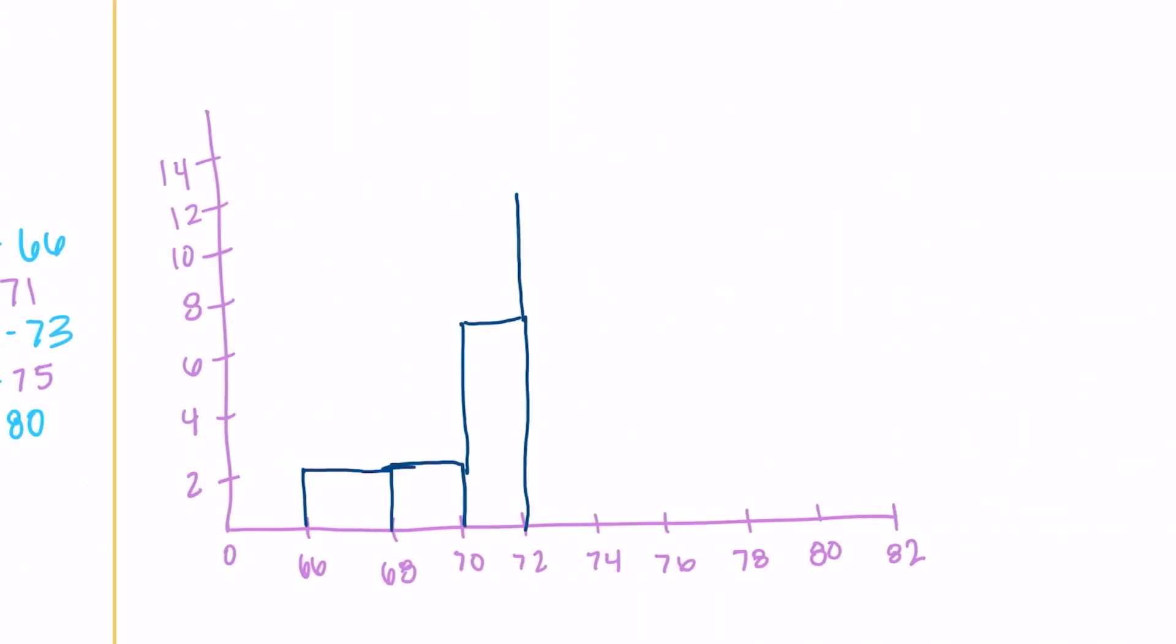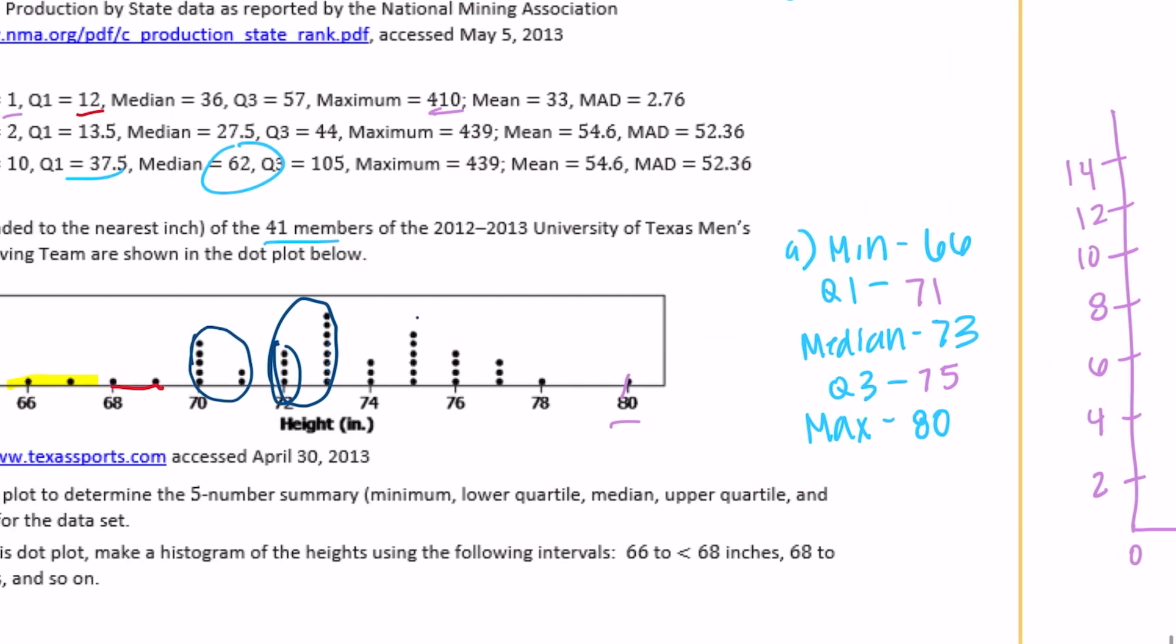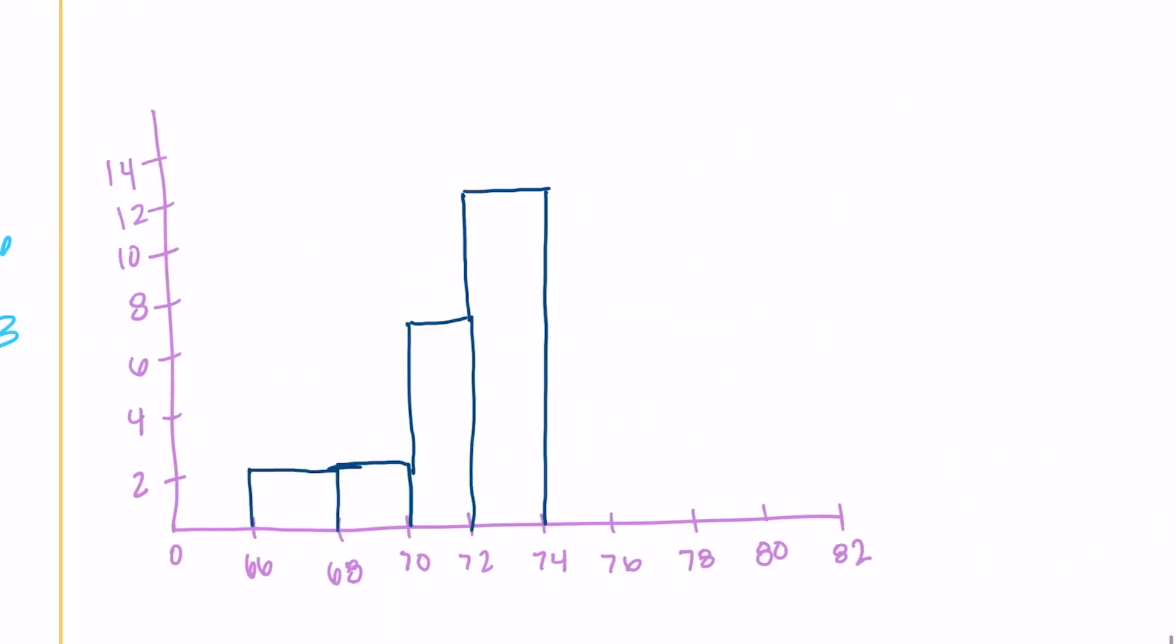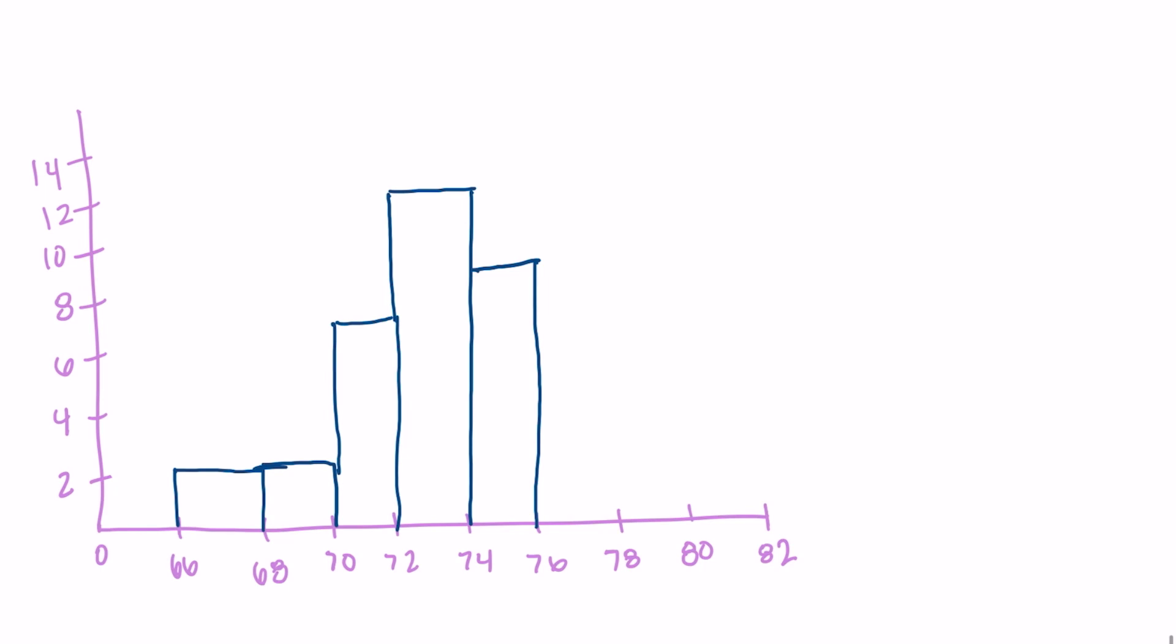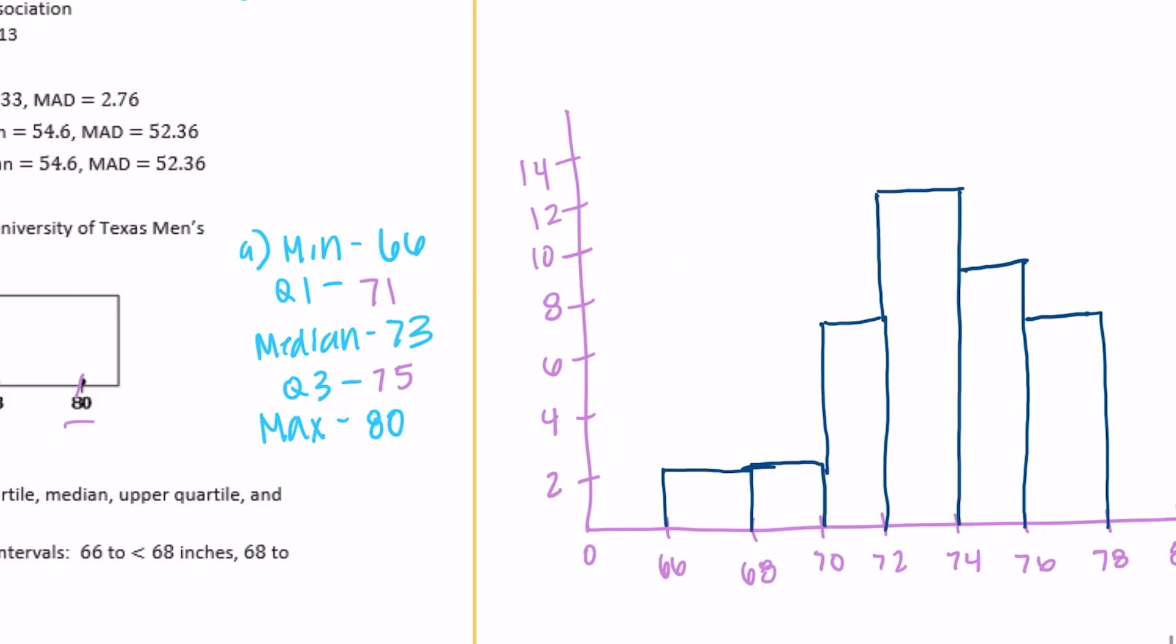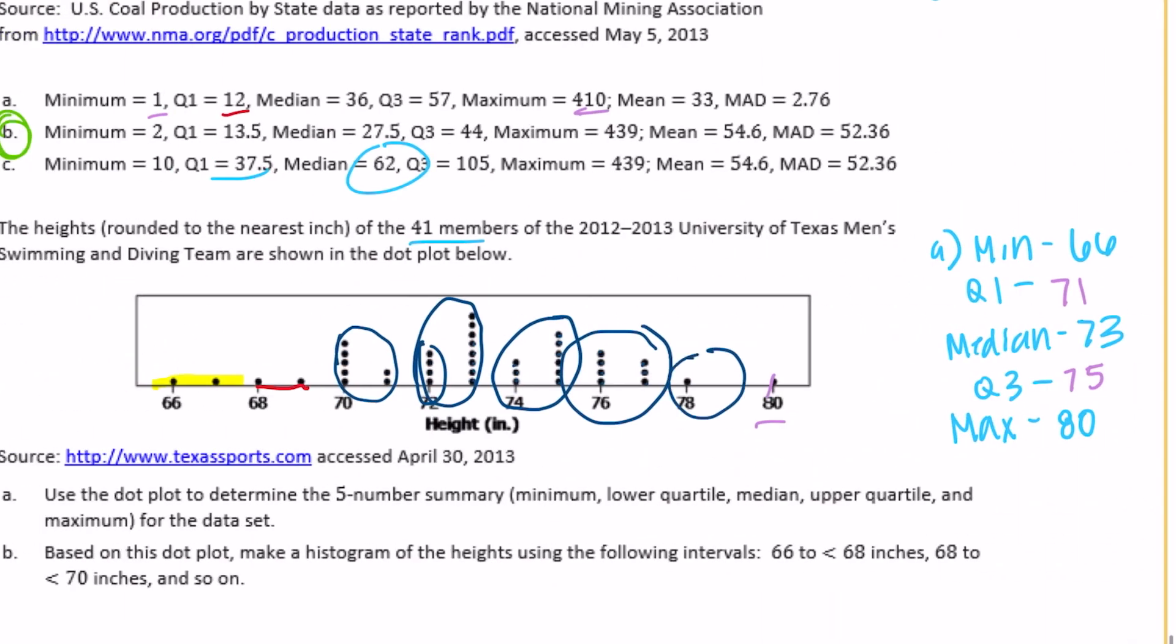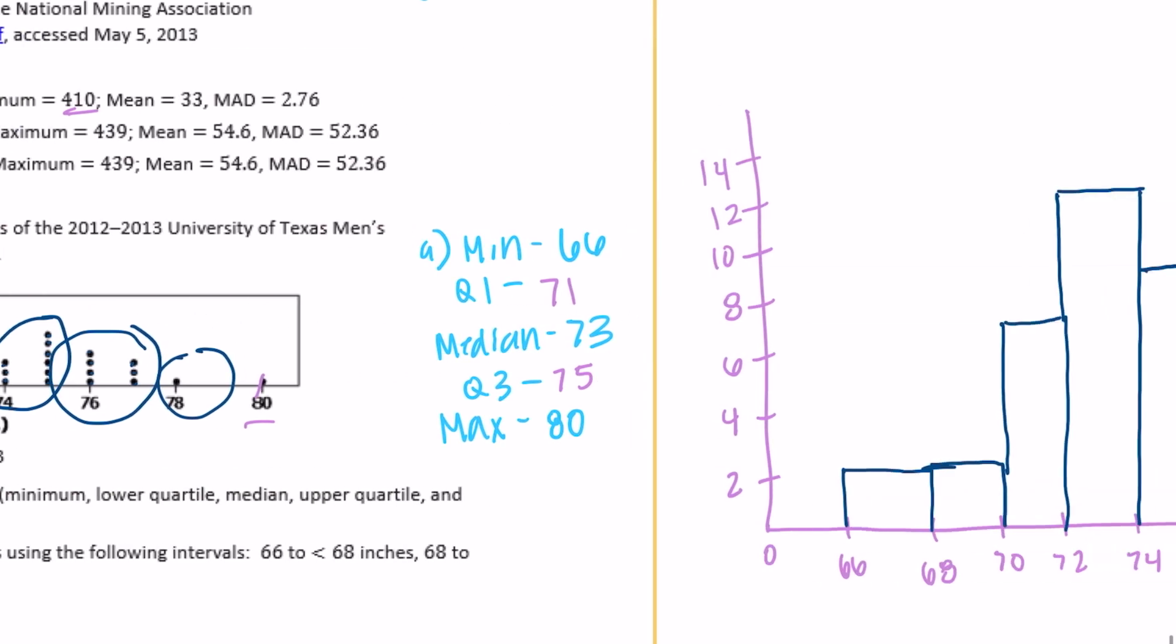Between 74 and 76: 1, 2, 3, 4, 5, 6, 7, 8, 9. Now it's getting a little lower, this data is starting to go back down. 76 and 77 would be 1, 2, 3, 4, 5, 6, 7. 78 and 79 there's only 1, and then there's 1 on 80 as well.